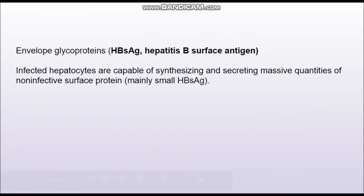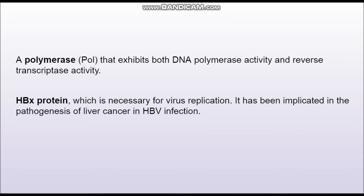HBsAg has many further components. Importantly, when there is infection, the infected hepatocytes secrete and synthesize massive quantities of HBsAg, which can be detected in the blood. There is also a polymerase enzyme responsible for DNA polymerase activity and reverse transcriptase activity. Additionally there is a protein known as HBX protein, which is implicated in the pathogenesis of liver cancer in hepatitis B infection.